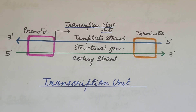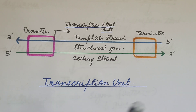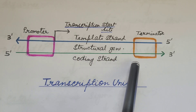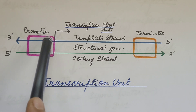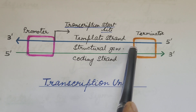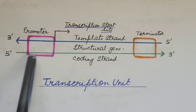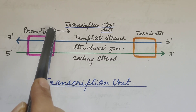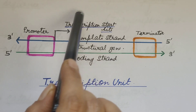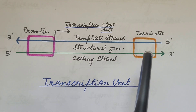Now let us understand the transcription unit with the help of a diagram. This is the double-stranded DNA. This is the promoter region and this is the terminator region. The region flanked by the promoter and terminator region is known as the structural gene. This stretch or segment of DNA is known as the transcription unit. The promoter is the start site of transcription and the terminator is the region where transcription stops.